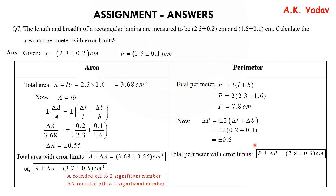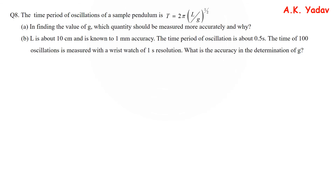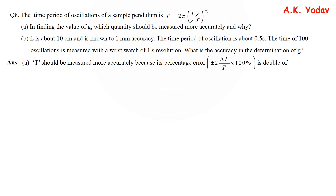The rounding was done because there were 2 significant figures in L and B, so the result was rounded to 2 significant figures, and the error was rounded to 1 significant figure. For the perimeter, the factor of 2 arises because perimeter = L + B + L + B, which is 2 times length and 2 times breadth. For question 8, the time period formula is given. T should be measured more accurately because its percentage error (2 × delta T / T × 100%) is double the percentage error of L.